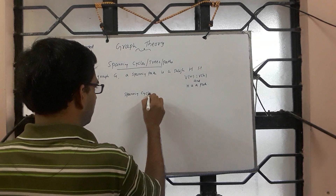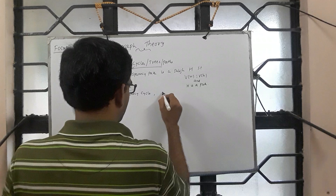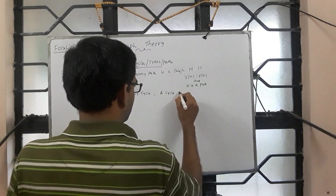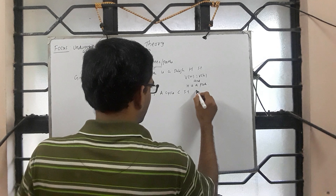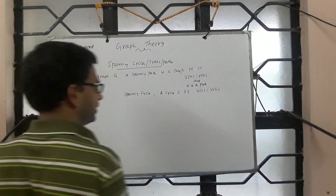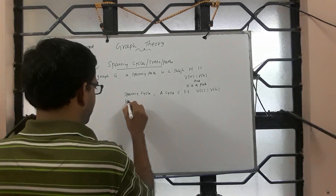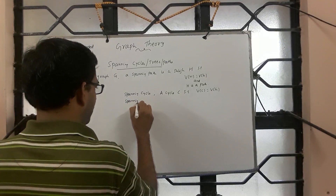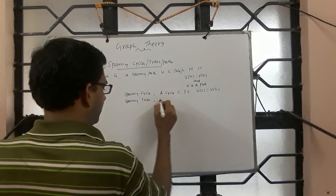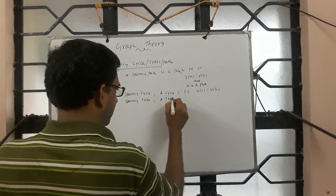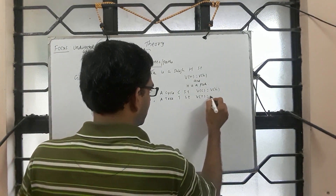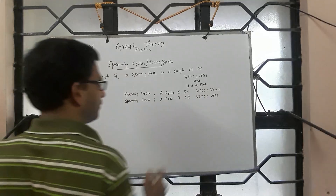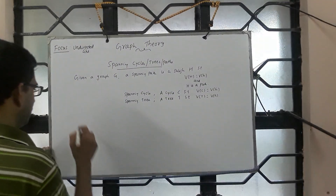Formally, a spanning cycle of G is a cycle C such that V of C is the same as V of G. And a spanning tree is a tree T such that V of T is the same as V of G.